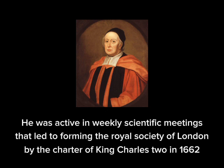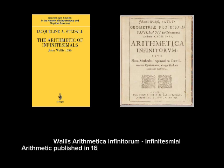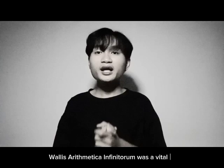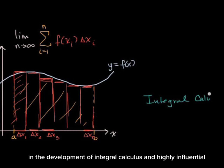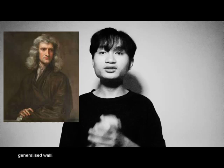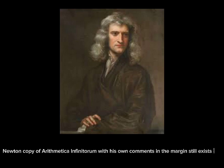Wallis' Arithmetica Infinitorum (Infinitesimal Arithmetic), published in 1656, was his greatest mathematical work. It was a vital stage in the development of integral calculus and highly influential. In 1665, at the age of 22, Isaac Newton generalized Wallis' work to make his first great discovery — the generalized binomial theorem. Newton's copy of Arithmetica Infinitorum, with his own comments in the margin, still exists.